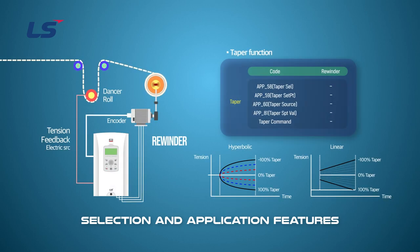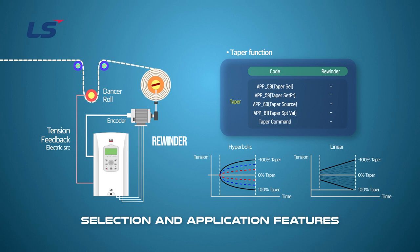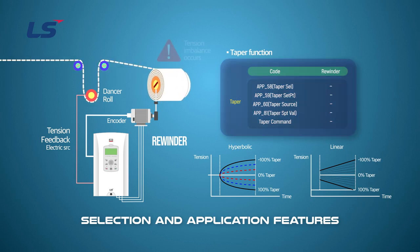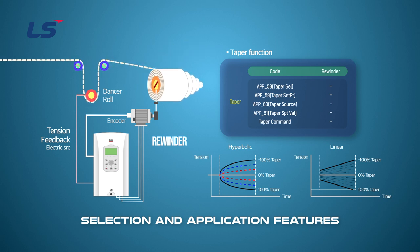When the tension command is given constant, as the roll increases, the stress is combined in the direction of the bobbin center and the actual tension increases. Tension must be compensated by the value corresponding to mechanical stress, and the function of compensating for this tension is called the taper function. Failure to compensate may result in a narrower width of the material as the diameter increases. The amount of compensation varies depending on the material and its characteristics, so the value is set through operation.